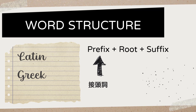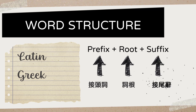Usually a prefix is the beginning of the word, and it is used as a description of what is going to be described in the root. For example, it can talk about numbers, yes or no, or big or small — it's a description of what the root is. The root is basically the major description of what we are actually talking about; it could be an object or something scientific. And last but not least, the suffix is basically describing what the word is used for — it can describe something as an adjective or as a verb. Sometimes a suffix can also add more meaning to the root, so it's pretty multipurpose.